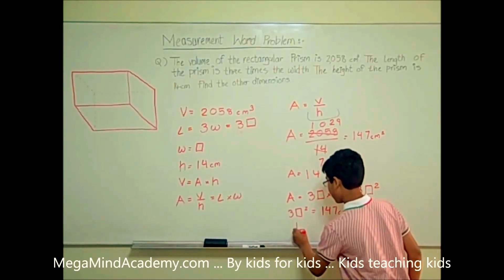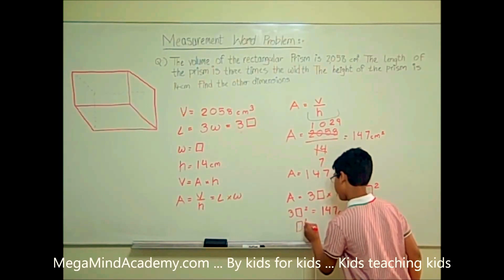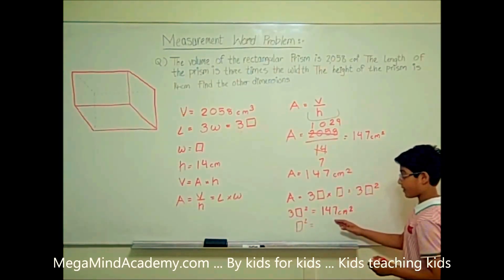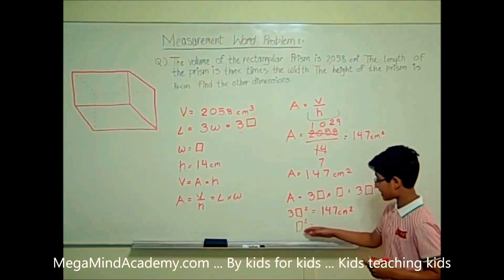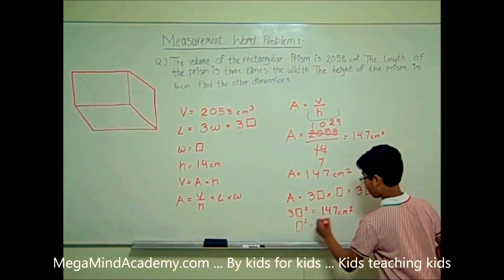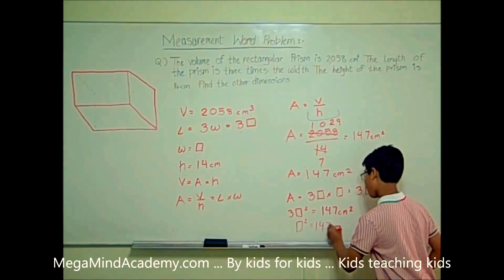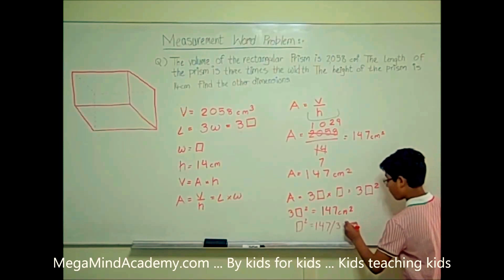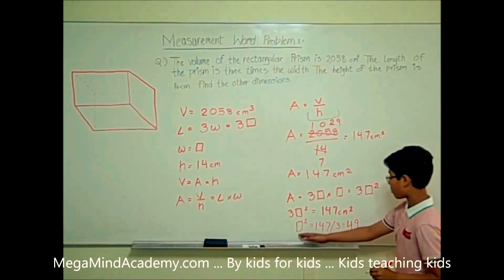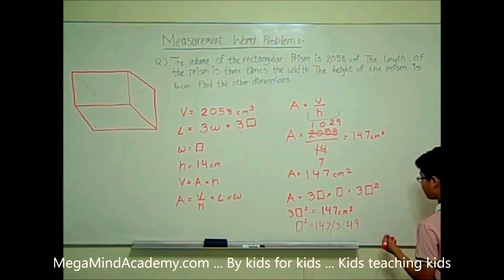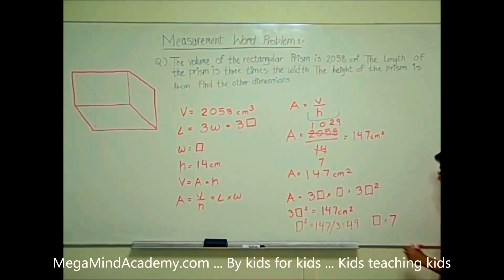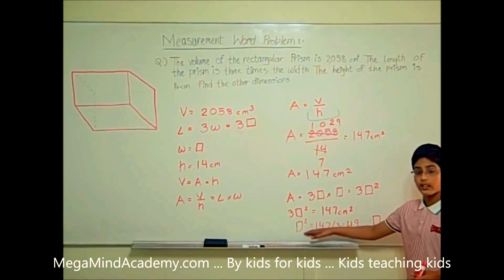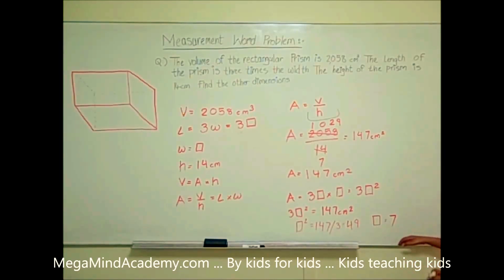This means that unit squared is equal to 147 divided by 3, because 3 units squared divided by 3 equals unit squared. 147 divided by 3 is equal to 49. So unit squared is equal to 49, which means unit is equal to 7, because the square root of 49 is 7 and the square root of unit squared is unit.